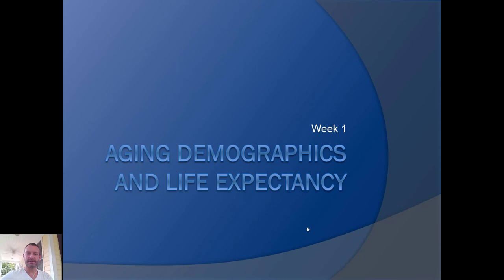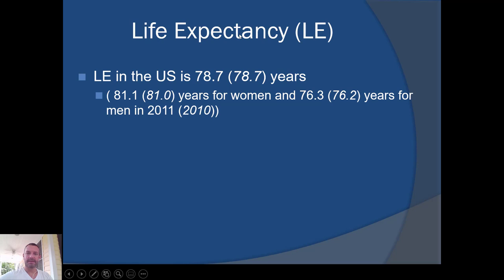Aging demographics and life expectancy. Even though this is a little dated, life expectancy in the U.S. is around 81 for women and 76 for men. There are different data sources, whether it's the CDC or the World Health Organization, which is why there are multiple numbers here. It depends on what reference and data source you're using to determine life expectancy.